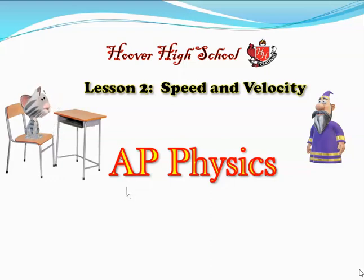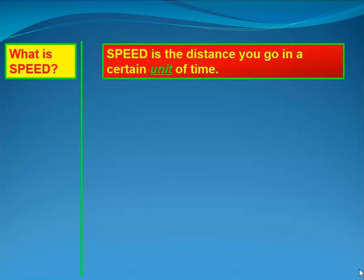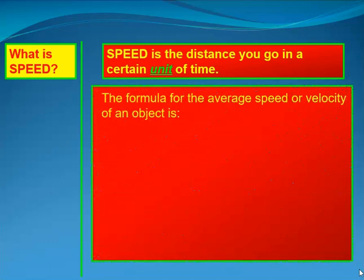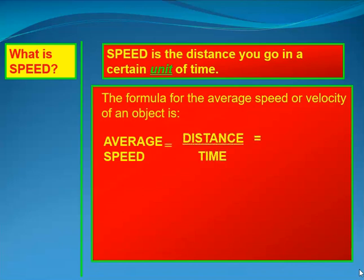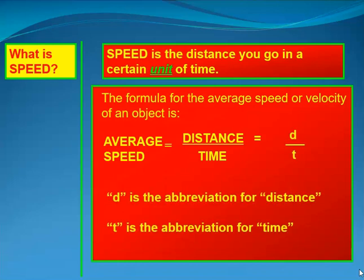AP Physics — this is the second lesson in the summer assignment; it's on speed and velocity. Speed is the distance you go in a certain unit of time. The formula for average speed or velocity is: average speed equals distance over time, or D over T, where D is the abbreviation for distance and T is the abbreviation for time.